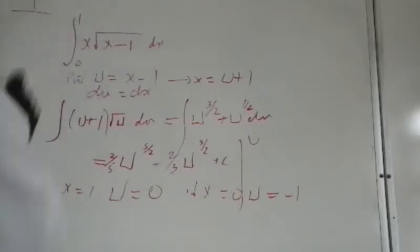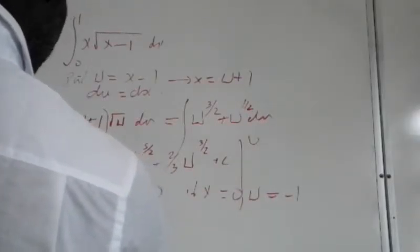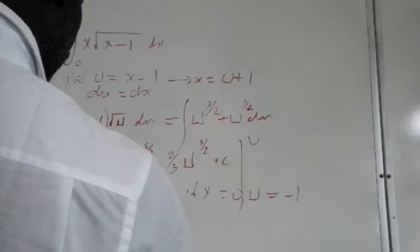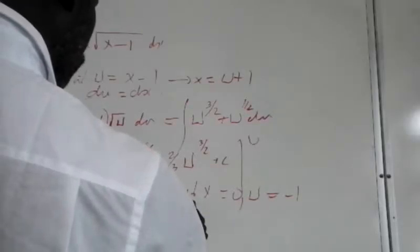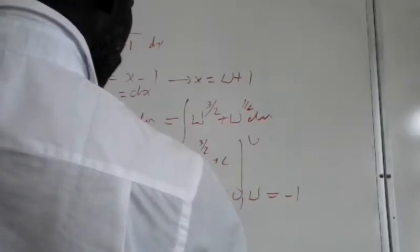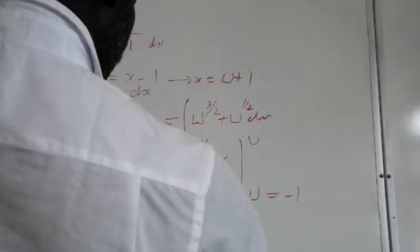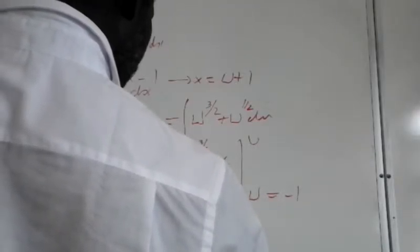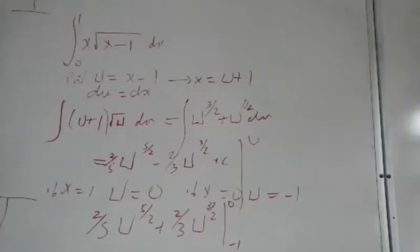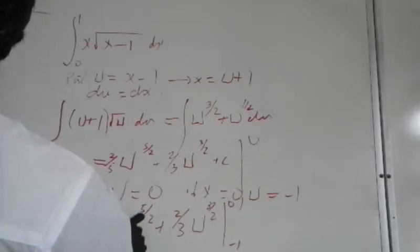So we have 2 fifths. Of course we could make a substitution and keep the original limits, get it back in the form of x, but either method you will get the same answer. So we have 2 fifths of u to the 5 over 2 plus 2 thirds u to the 3 over 2 between minus 1 and 0.